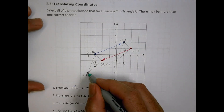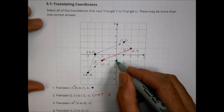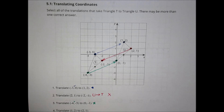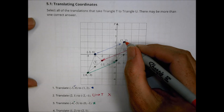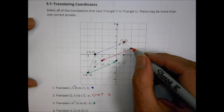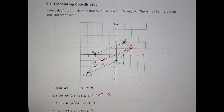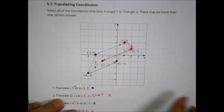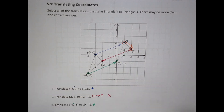Translating from negative 4, negative 3 to 0, negative 1 — that's going in the right direction, so yes for that one. But translating 1, 2 to 2, 1 is not even close; we'd say no. The idea is looking at how we can slide things around on a coordinate plane, lining up coordinates to find matching pieces of the other shapes.